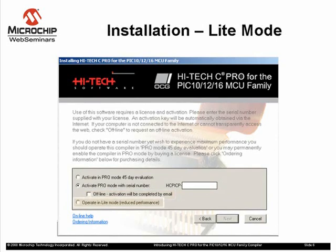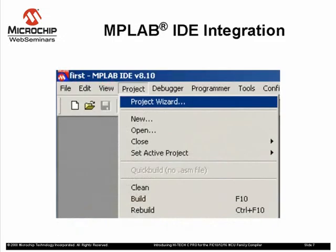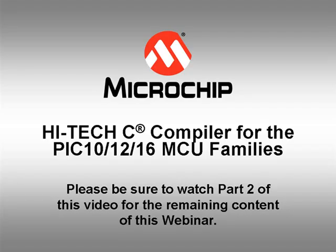To immediately run in light mode, click the Operate in Light Mode radio button at the appropriate page in the install dialog. This mode does not require internet access at all, and you can use the compiler immediately after installation.